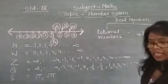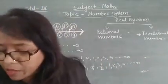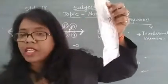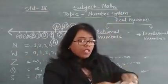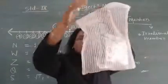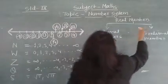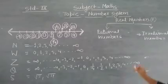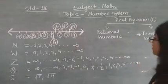We can keep all rational numbers together, and keep irrational numbers separate, and place them all in one pouch. This pouch is called real numbers, represented by R. Real numbers are made up of rational numbers and irrational numbers.